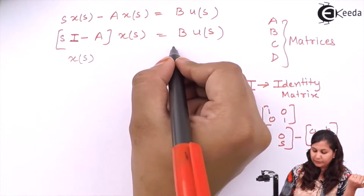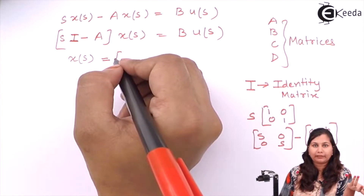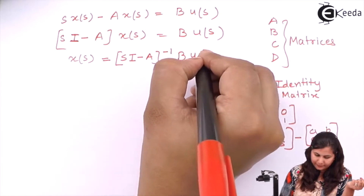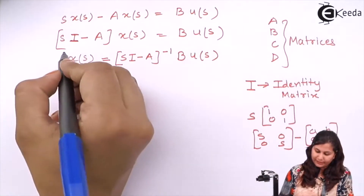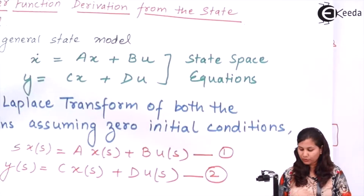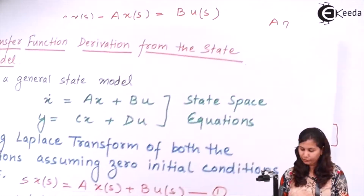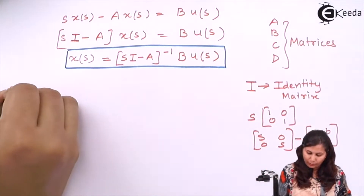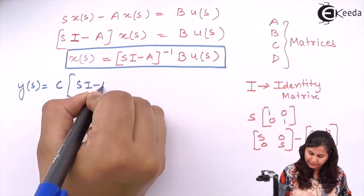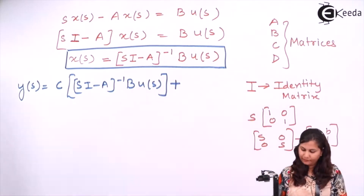Since (sI minus A) is a matrix, bringing it to the right-hand side means it becomes the inverse. So X(s) equals (sI minus A) inverse times BU(s). This is the value of X(s). Now in the second equation we have Y(s) equals CX(s) plus DU(s). Substituting the value of X(s) gives Y(s) equals C times (sI minus A) inverse times BU(s) plus DU(s).